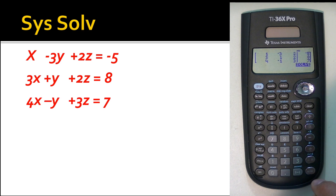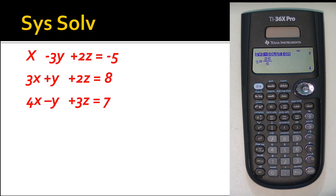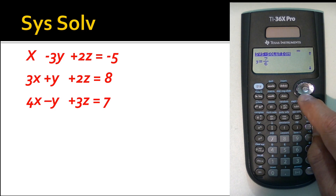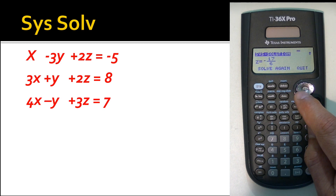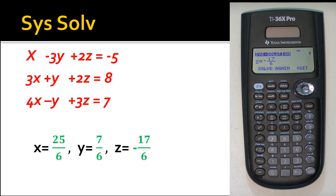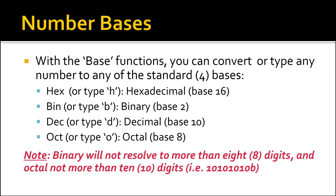Continue with the third equation: four, Enter; negative one, Enter; three, Enter; right-hand side seven, Enter. Then hit Solve. It shows x equals 25 over six, y equals 7 over six. Arrow down to see z equals negative 17 over six. That matches the previous result exactly: 25/6, 7/6, and -17/6. Hit Quit to exit the screen.